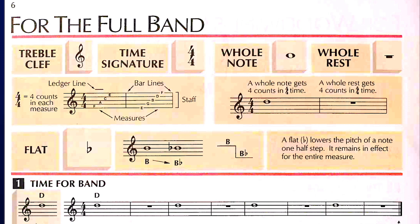Let's start lesson one on page six of the Standard of Excellence by looking at the upper left-hand corner: treble clef. This is important because it's the clef that determines the names of the spaces and lines of the staff.